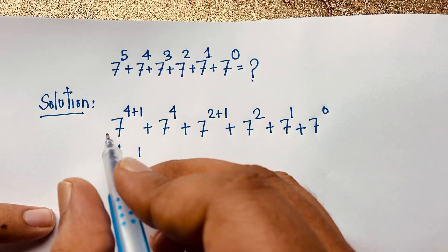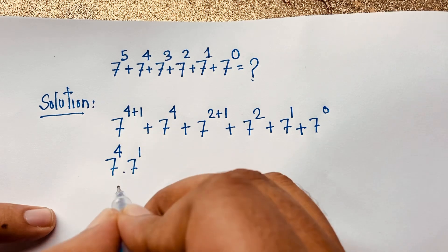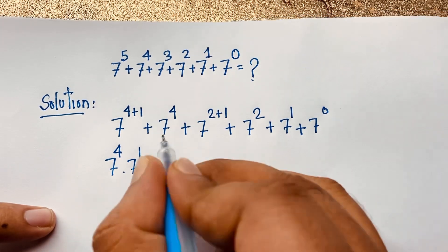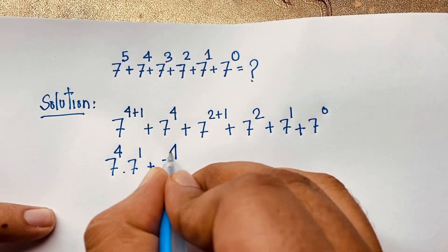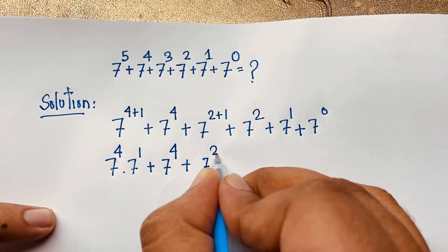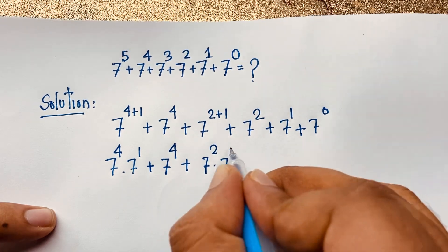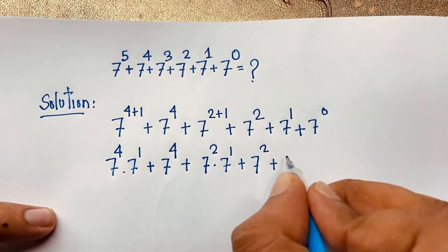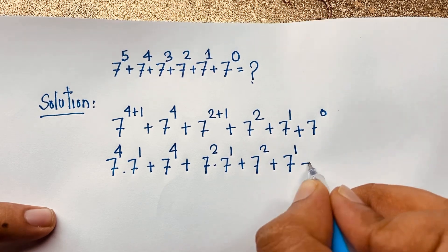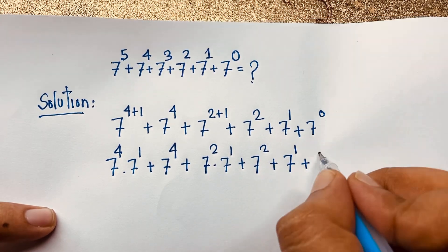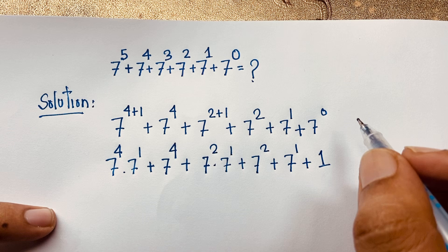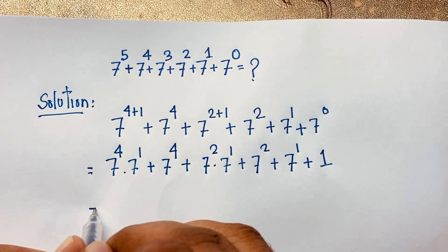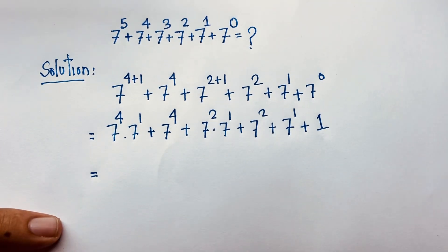According to the exponential law, we know that a to the power (n plus m) equals a to the power n times a to the power m. Applying this, we get: 7 to the power 4 times 7 to the power 1, plus 7 to the power 4, plus 7 to the power 2 times 7 to the power 1, plus 7 to the power 2, plus 7 to the power 1, plus 7 to the power 0 — which equals 1, since any number to the power 0 is 1.